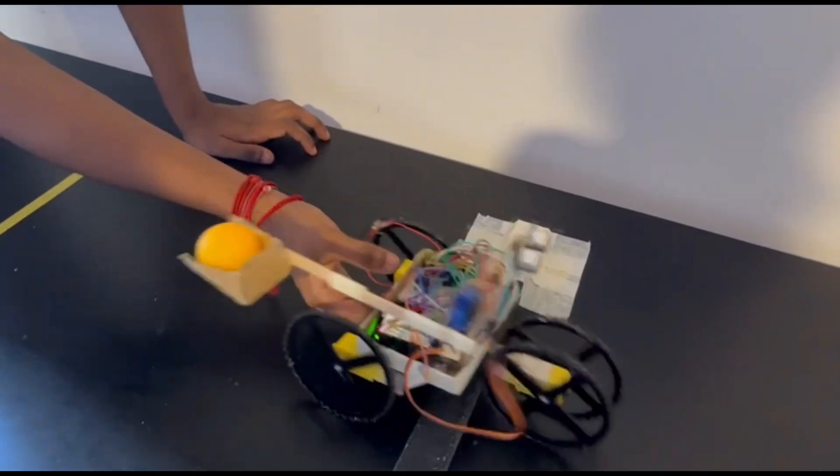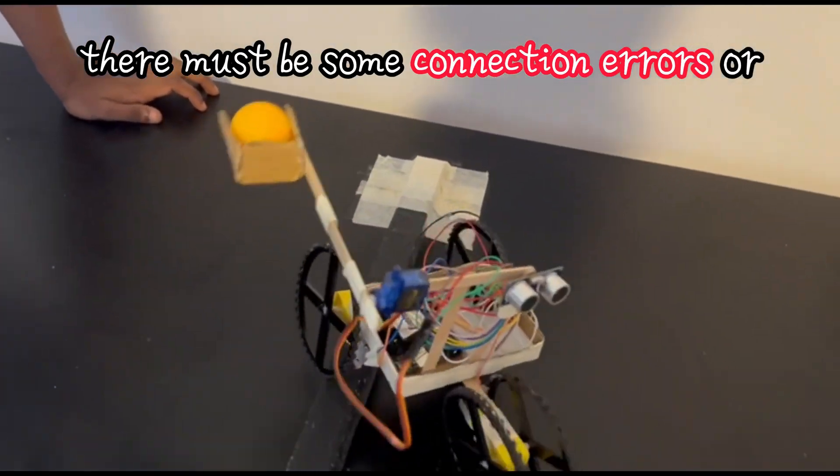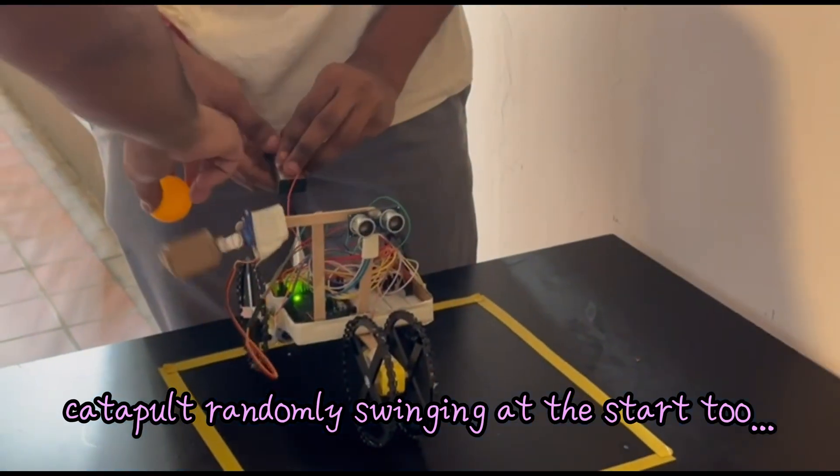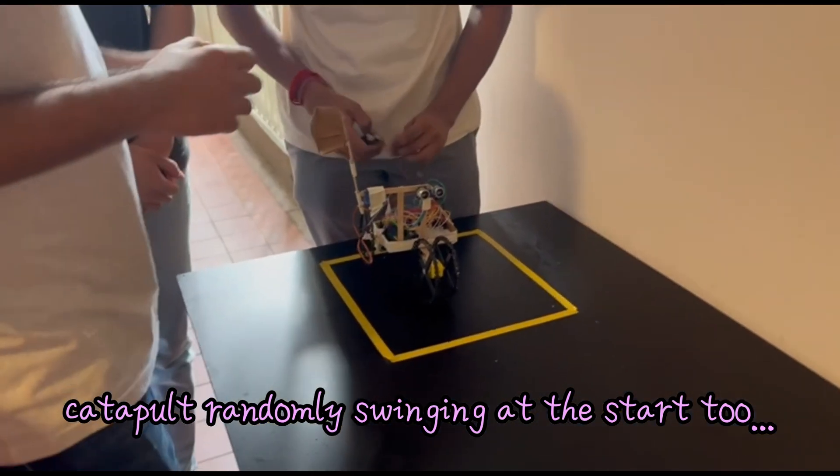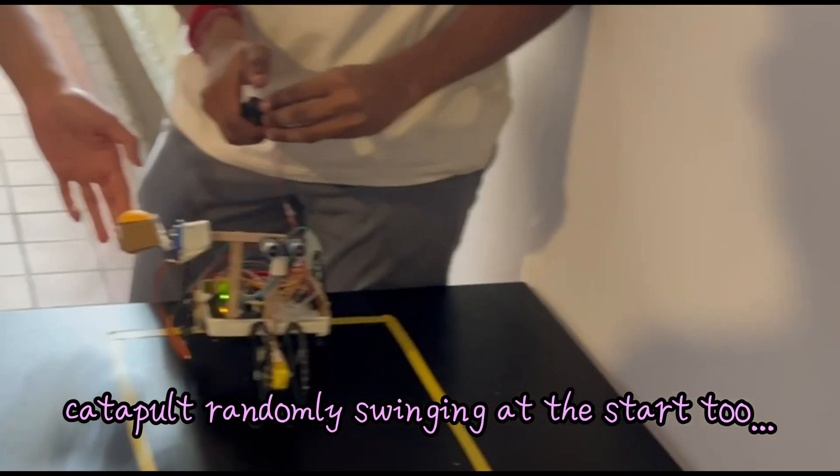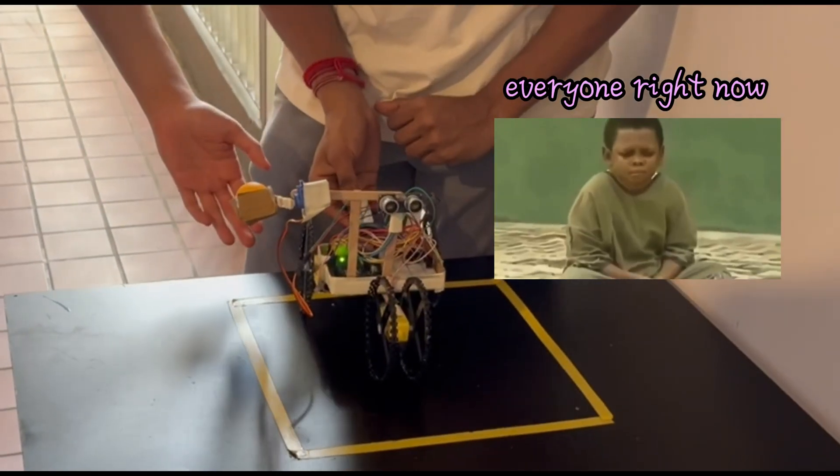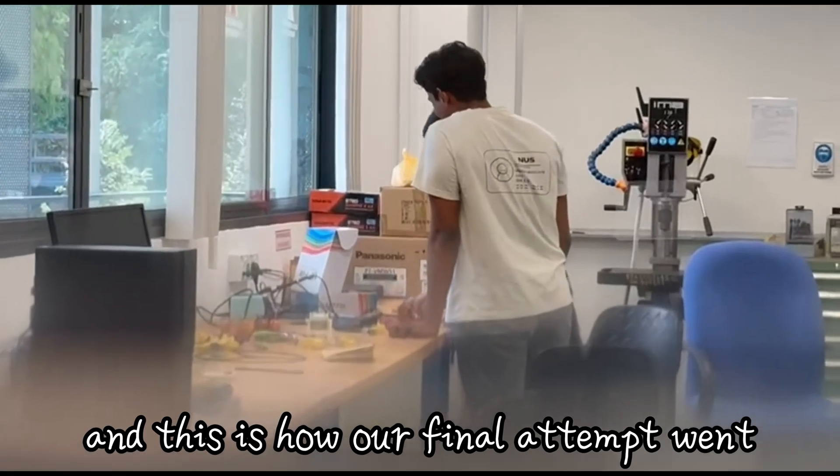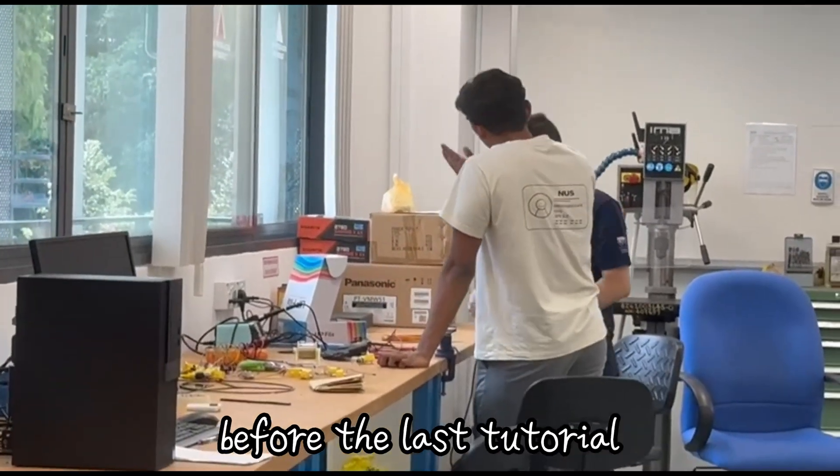We concluded that there must be some connection errors or loose connections around the battery or wires because our robot was just not working consistently. We decided to request for a battery cover replacement and this is how our final attempt went before the last tutorial.